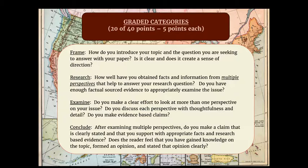Your next category is called examine, and I believe this is the most challenging one, because you're supposed to look at multiple perspectives on your topic. Do you make a clear effort to look at more than one perspective? Do you discuss each perspective with thoughtfulness and detail? And do you make evidence-based claims? For example, if you're talking about the Mexican-American War, discuss the Mexican and American perspectives. For the Oregon Treaty, discuss the British and American perspectives. For the Trail of Tears, discuss the Native American and American perspectives. If you don't do that, you're not going to get a good grade on the examine portion.